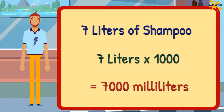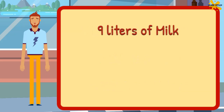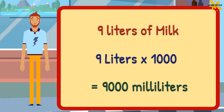And if your answer was inaccurate but near to the value, try another one. Tell me how much 9.5 liters of milk is in milliliters. Just multiply 9.5 liters by 1,000. You should get 9,500 milliliters. Great work if you got the precise value. And if your answer was incorrect, practice more.